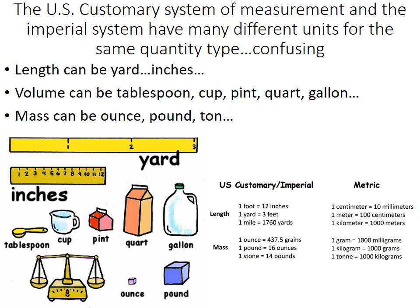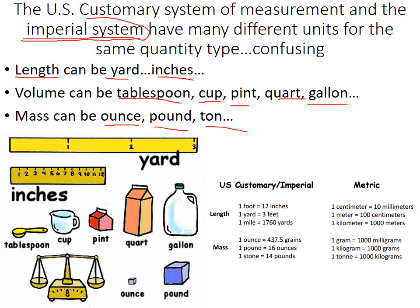The old US customary or imperial system is not the SI system. The problem with it is that there were so many different units for the same quantity. For length, instead of just meters, you could have yards, inches — different instruction books used different units and you'd have to convert between them. For volume you could have tablespoons, cups, pints, quarts, and gallons — confusing and annoying. For mass, rather than just grams, you'd have ounces, pounds, and tons, which was very difficult to convert between. The imperial system is definitely not as good as our international SI system.